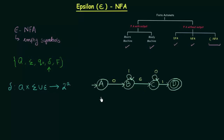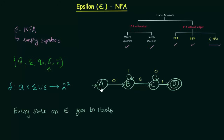One important point to remember: every state on Epsilon goes to itself. Even though no Epsilon transition is mentioned for A, A on Epsilon goes to A itself. B on Epsilon goes to B itself, and also to C since it is explicitly mentioned. C on Epsilon goes to C itself, and on 0 to C, and on 1 to D. D on Epsilon goes to D itself. Every state on Epsilon goes to itself — this is an important rule.